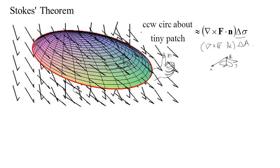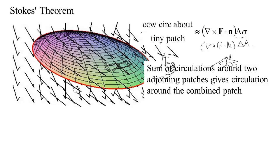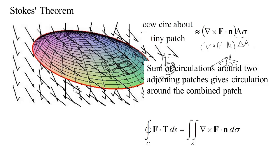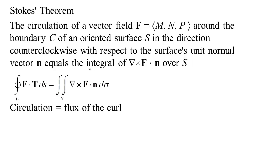That's the first idea of Stokes' theorem — a straightforward generalization of the first idea of Green's theorem. The second idea is the same as well: if you have adjoining patches and find circulation around each, the circulation on the shared boundary cancels and you get the circulation around the combined region. So the sum of the circulations around two adjoining patches gives the circulation around the combined patch. Summing up all the tiny patch circulations gives the circulation around the full boundary. The basic statement of Stokes' theorem is then: integrate del cross F dot n dσ over the surface.